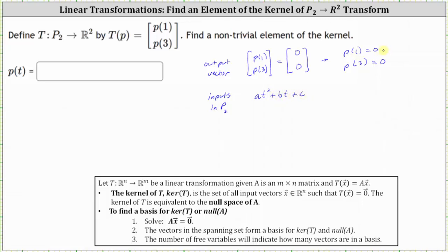But we also know that p of one must equal zero and p of three must equal zero. Therefore, it'd be helpful to have the factored form of the degree two polynomial. The factored form can be written as A times the quantity t minus R1 times the quantity t minus R2, where R1 and R2 are the roots or zeros, which would be the values that make the degree two polynomial equal to zero.